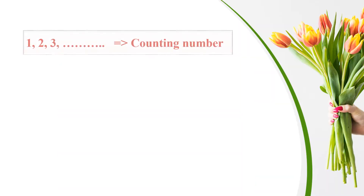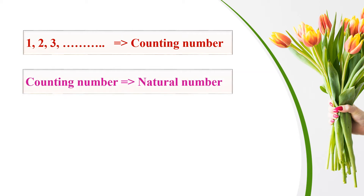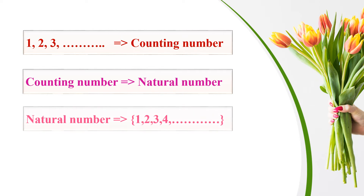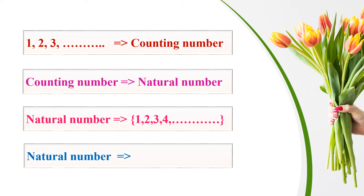When I ask the question 'how many pencils are there?', you start to count: one, two, three. This is called counting numbers. We have another name for counting numbers — that is natural numbers. Natural numbers is denoted by the set of one, two, three, four, five, and so on.